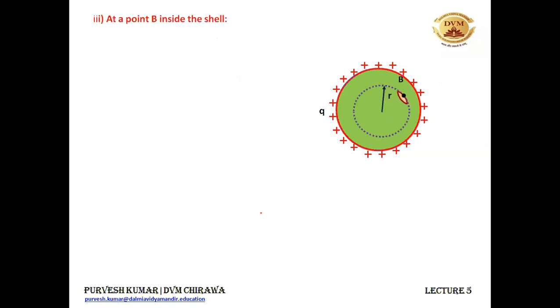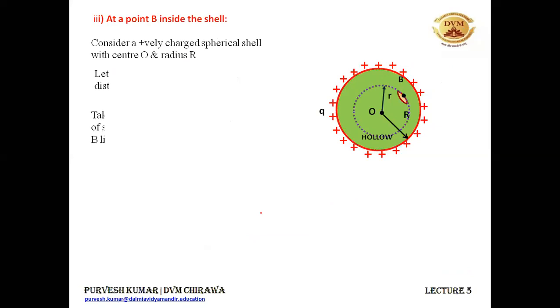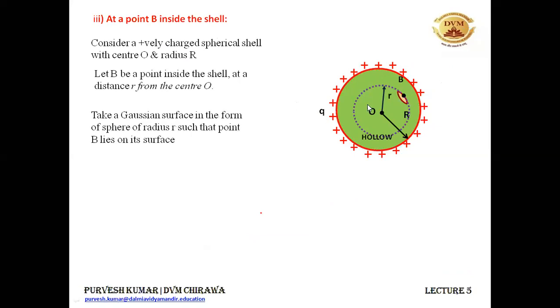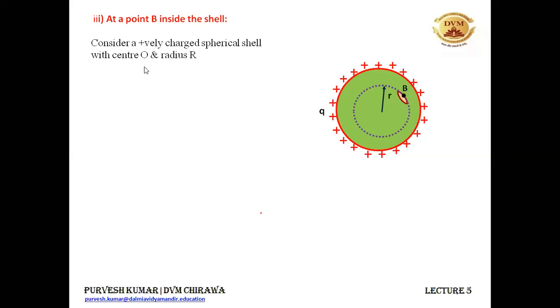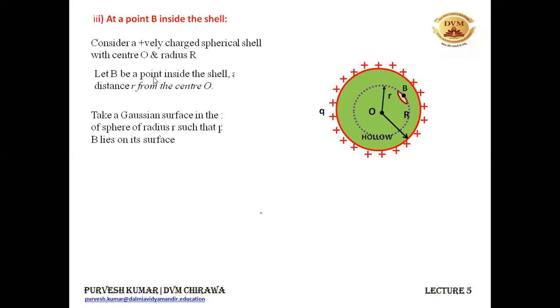Now let's take a point B inside the spherical charged shell. We take a Gaussian surface such that point B lies on its surface. This is a charged spherical shell of radius capital R. The Gaussian surface has radius small r such that point B lies on its surface. The electric field points radially outward, as does the area vector ds. The flux through the Gaussian surface is E times 4 pi small r squared.